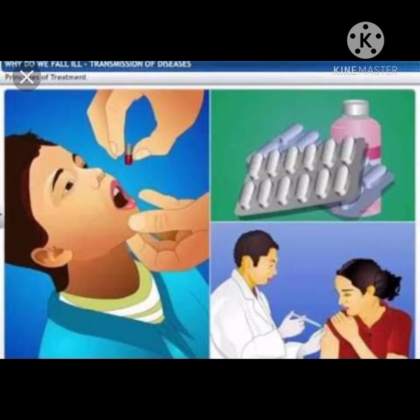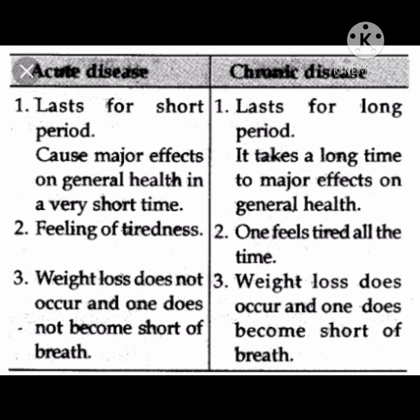Based on the duration of disease, diseases are mainly classified into two types: acute diseases and chronic diseases. Acute disease means the disease lasts for only a short period of time, whereas chronic diseases last for a long time — sometimes as much as a lifetime. So we can classify diseases into acute or short-term, and chronic or long-term.